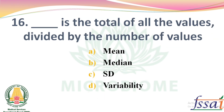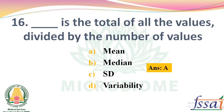Dash is the total of all the values divided by the number of values. Options: Mean, Median, SD, Variability. The right answer: Option A, Mean.